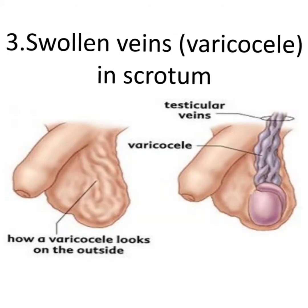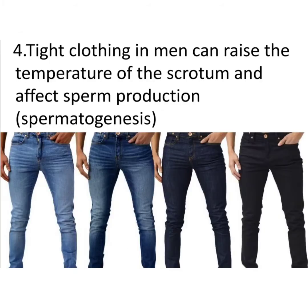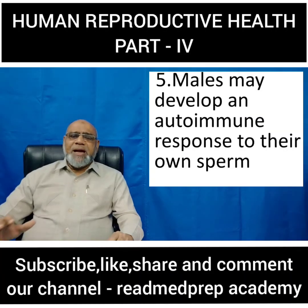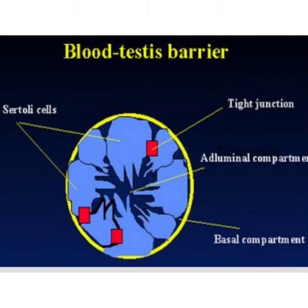Varicocele looks like a bag of worms from the outside. These tortuous and enlarged testicular veins increase the temperature of the testis and decrease sperm synthesis. Tight clothing in men can also raise scrotal temperature and affect sperm production. Males may also develop an autoimmune response to their own sperm. There is a blood-testis barrier which normally prevents sperm from entering the blood; if this barrier is affected, sperms may enter circulation or the reticuloendothelial system.